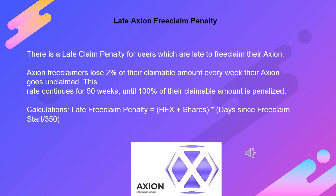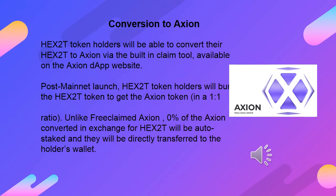Late free claim penalty formula: Penalty = HEX shares × (days since free claim start / 350). Conversion to Axion: HEX 2T token holders will be able to convert their HEX 2T to Axion via the built-in claim tool available on the Axion DApp website. Post mainnet launch, HEX 2T token holders will burn the HEX 2T token to get the Axion token in a 1-to-1 ratio. Unlike free claimed Axion, 0% of the Axion converted in exchange for HEX 2T will be auto-staked — they will be directly transferred to the holder's wallet.